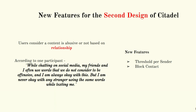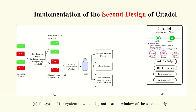Therefore, we identified two new features: threshold per sender and block contact. In the threshold per sender feature, users can specify whether the detection of abusive emails is agreeable to them or not. Here we can see the system flow of the second design and the user interface, showing the two new features: block contact and feedback about the accuracy of detection, where users can select inaccurate or accurate. If the user indicates the prediction is not right, the system automatically increases the threshold for that specified sender. The system shows the abusive email in the notification window only if the toxicity score exceeds the sender threshold.